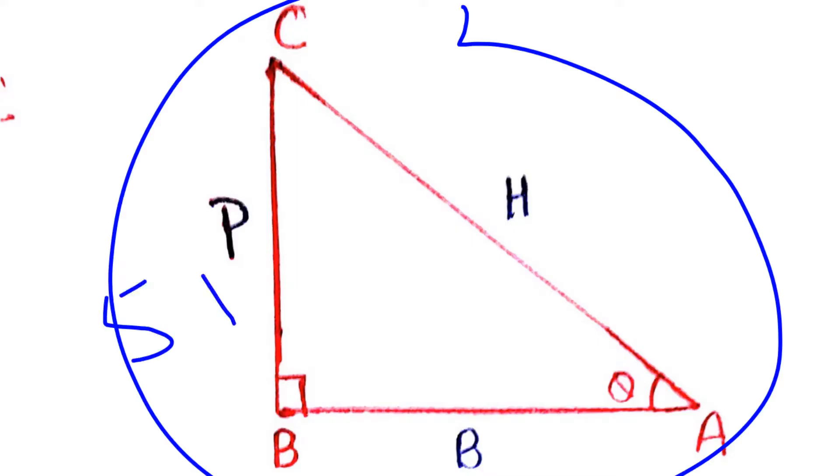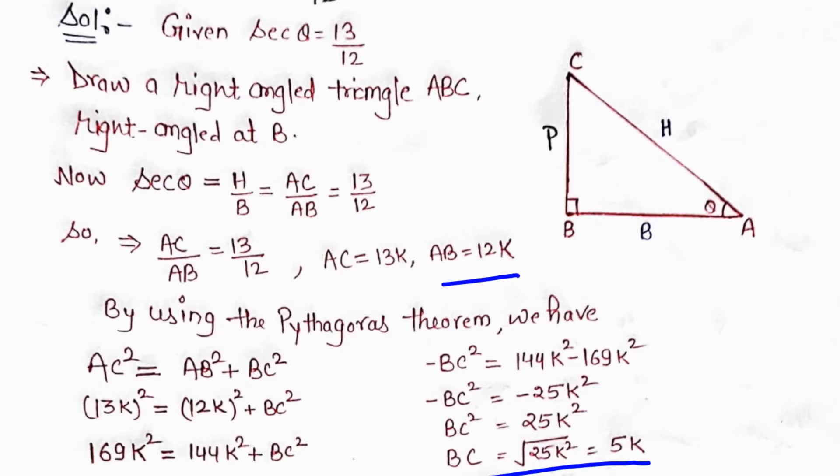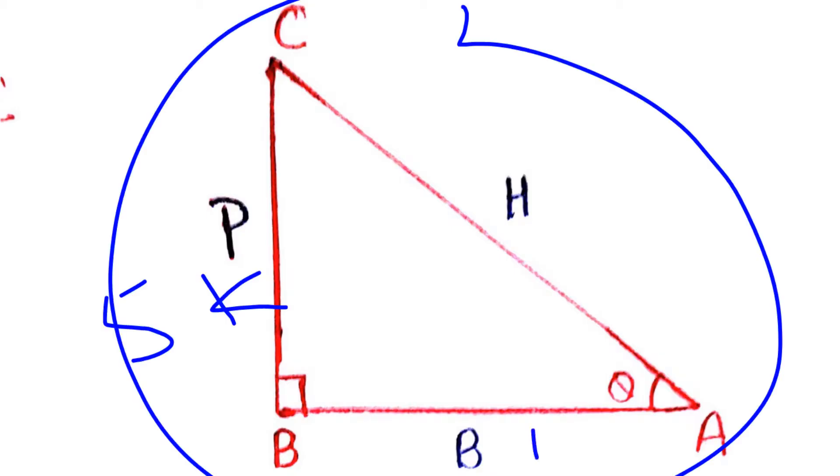So we have found all the values: AB = 12K, BC = 5K, and AC = 13K.